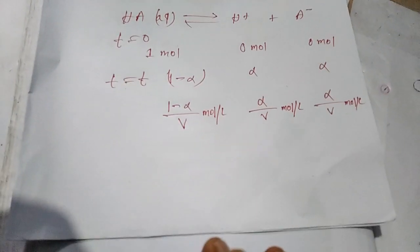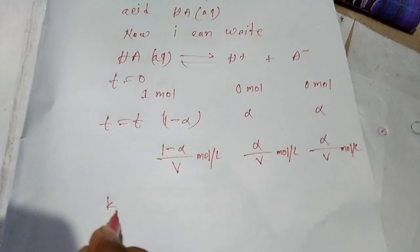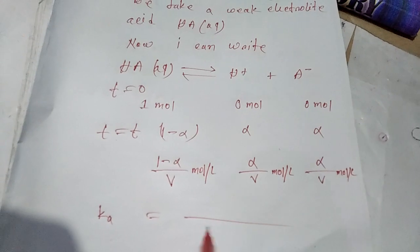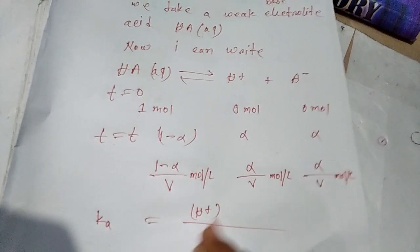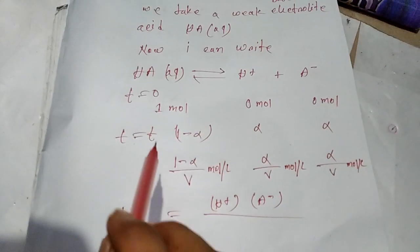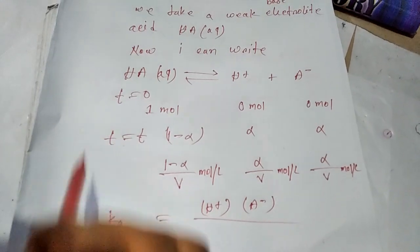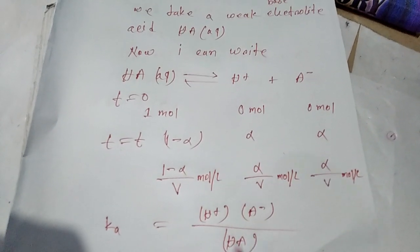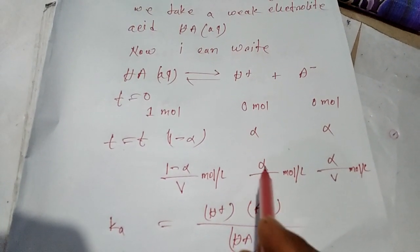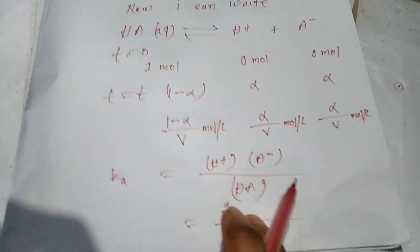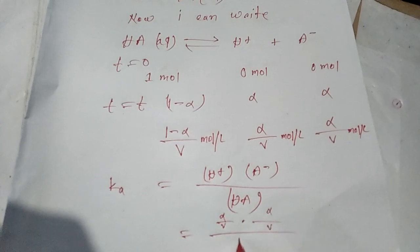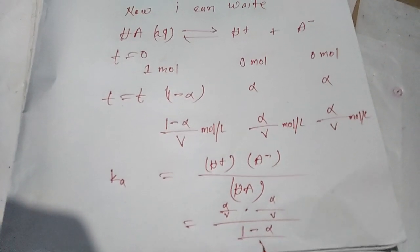Acid dissociation constant Ka equals product concentration [H+][A-] over reactant concentration [HA]. H+ is alpha by V, A- is alpha by V, HA is 1 minus alpha by V.